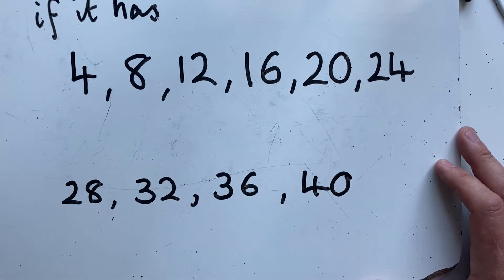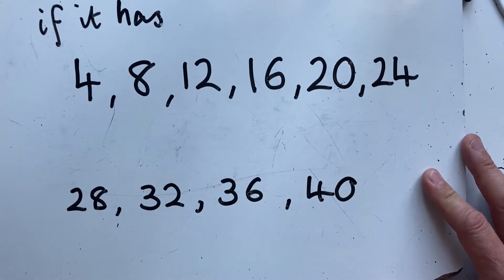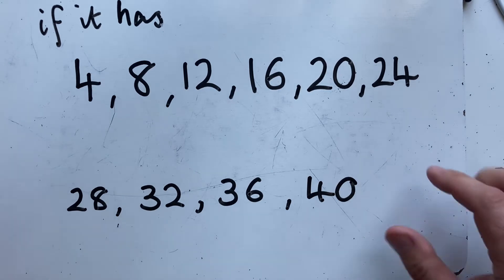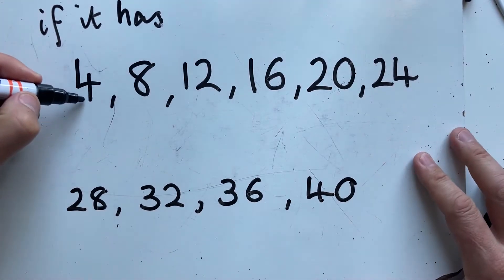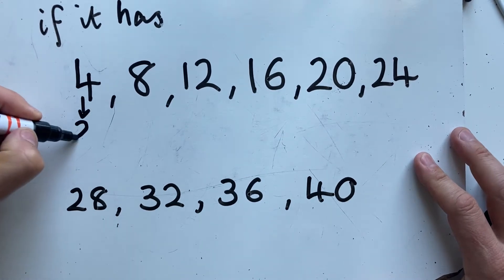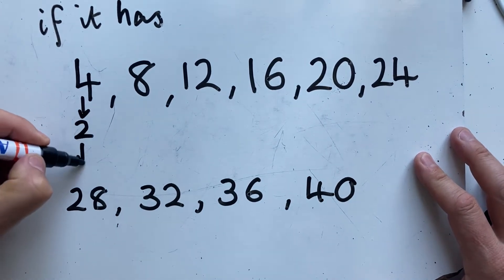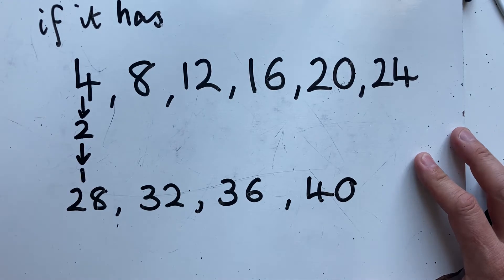Now the test of divisibility by 4 that I'm going to show you is this. I'm going to halve this number to give me 2 and I'm going to halve it again to give me 1. 1 is a whole number.